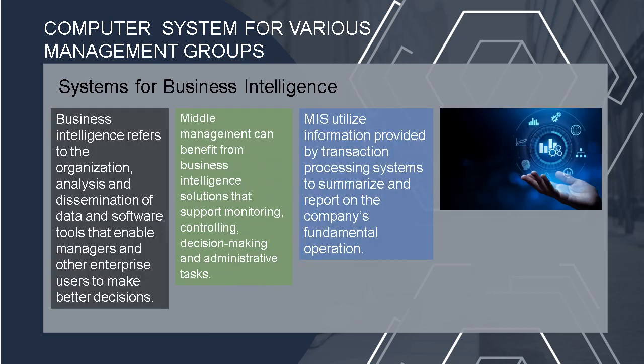Under systems for business intelligence, business intelligence refers to the organization, analysis, and dissemination of data and software tools that enable managers and other enterprise users to make better decisions. Middle management can benefit from business intelligence solutions that support monitoring, controlling, decision-making, and administrative tasks. MIS utilizes information provided by transaction processing systems to summarize reports on the company's fundamental operations.